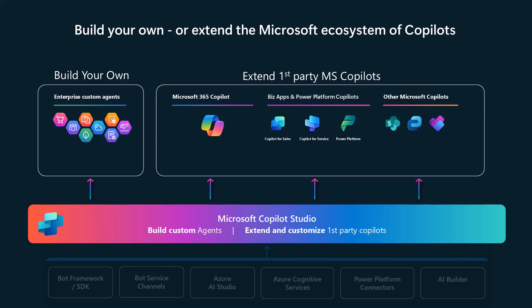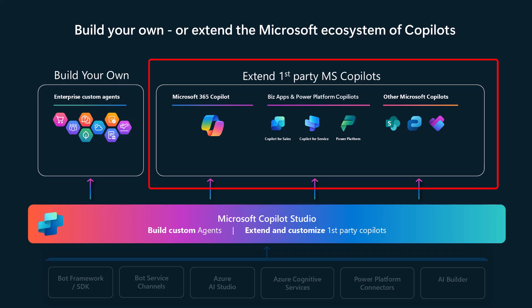Now let's talk about extending first-party Microsoft Copilot products. The M365 Copilot is just one of many that can be extended using Copilot Studio. This video is going to focus on the M365 Copilot agent capability. This gives you a similar experience to a smart speaker — these first-party Copilots don't let you just choose whatever channel you want to talk to them through. You're limited to the channels that they support.